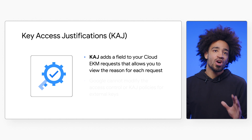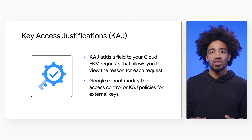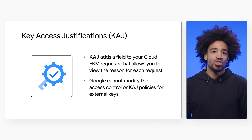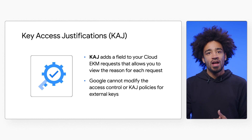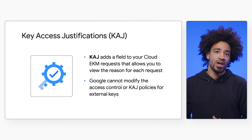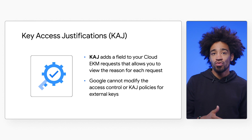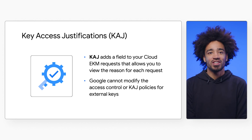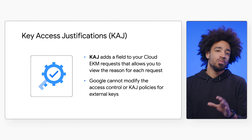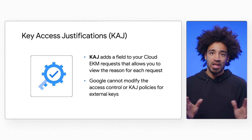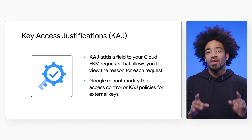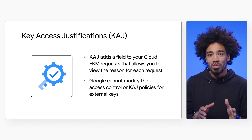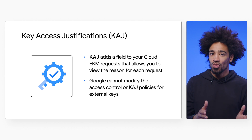The next sovereignty control is Key Access Justifications, or KAJ, which is offered through Assured Workloads. This control adds a field to your Cloud EKM request that allows you to view the system-generated reason for each request. You use KAJ to set policies to automatically approve or deny requests for keys based on the provided justification. It's important to note Google cannot modify the access controls or key access justification policies for any external keys, meaning that in the event of a third-party request for your data, you will be notified via request type and can approve or deny it.